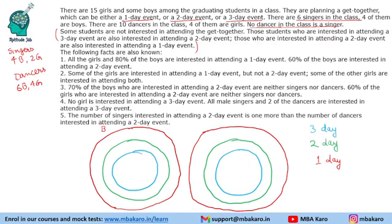We will make separate graphs for boys and girls — three-day event, two-day event, and one-day event. All the girls and 80% of the boys are interested in attending a one-day event. All girls are within the one-day event circle. 80% of the boys means if the total boys is 5x, then x boys are not interested in attending any event.